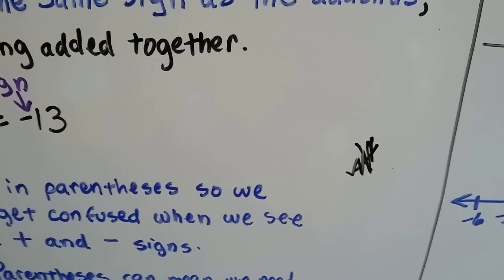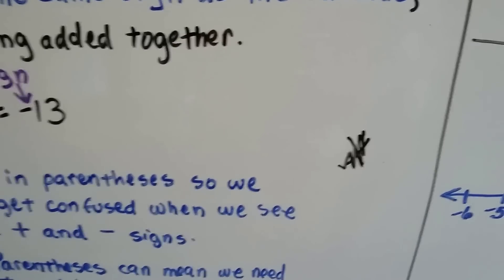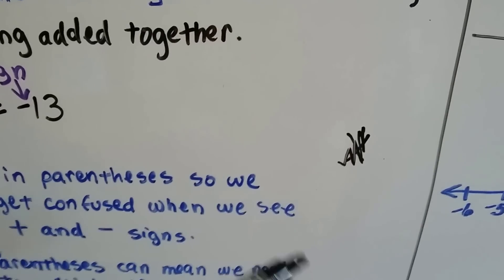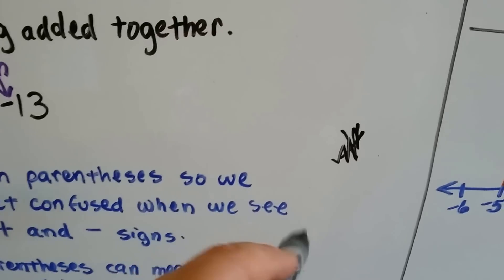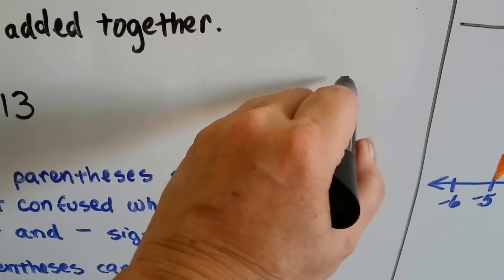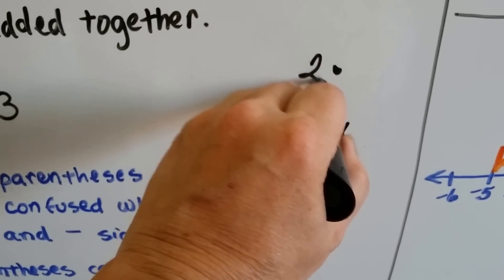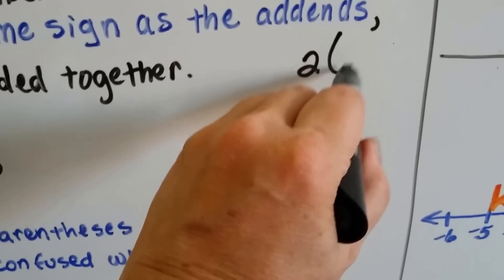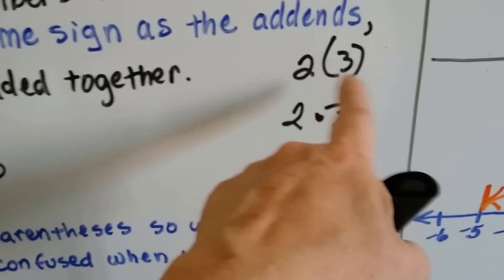We're not going to use x anymore to mean times because that could be the variable x. A variable is a number that stands for a value we don't know yet — we put x there to take the place of the unknown amount. So you'll see a dot like 2·3, or numbers in parentheses, to mean multiply.